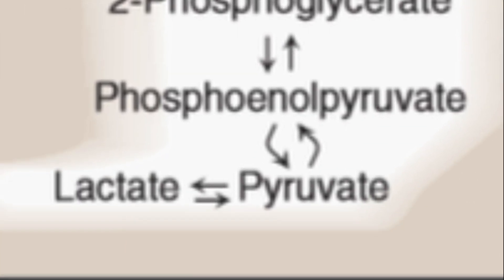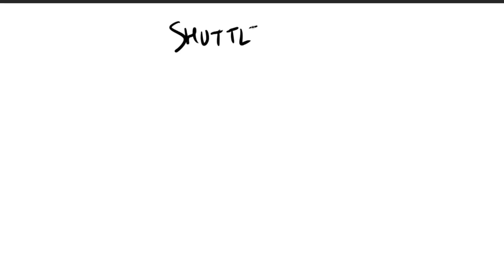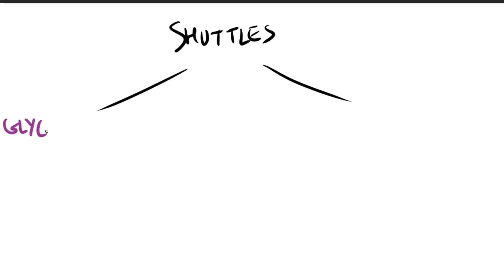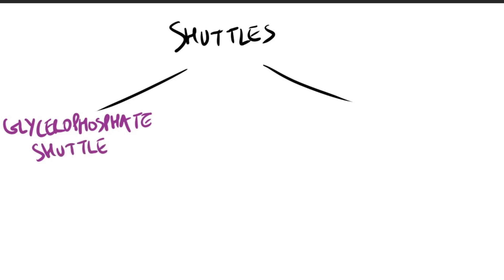If it is aerobic, glycolysis stops at pyruvate. If anaerobic, pyruvate converts to lactate via lactate dehydrogenase. Now we'll move on to shuttles. There are two types: the glycerophosphate shuttle and the malate-aspartate shuttle. These shuttles are important because glycolysis occurs in the cytosol, and the products need to move into the mitochondrial membrane for oxidative phosphorylation.